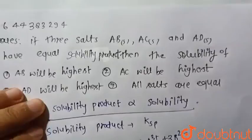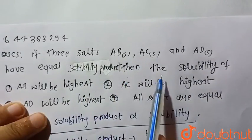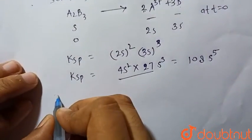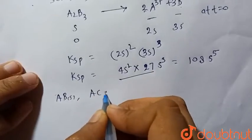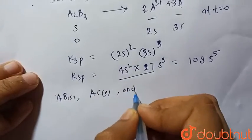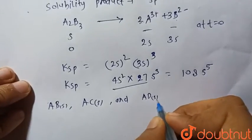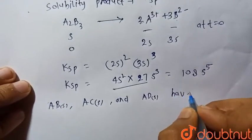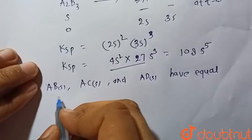It is given that three salts AB, AC, and AD have equal solubility products. So since they have equal solubility product, AB solid, AC solid, and AD solid have equal solubility product. Ksp equals Ksp equals Ksp.